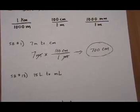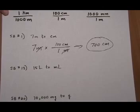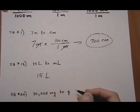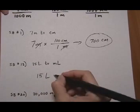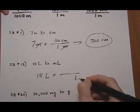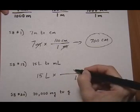Skill builder number 13: we have 15 liters and we want to go to milliliters. So we write down what you have, what you start with, times a fraction that makes liters cancel and leaves us with milliliter on top.